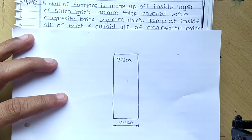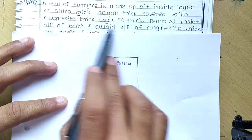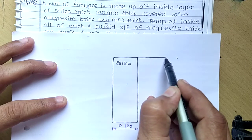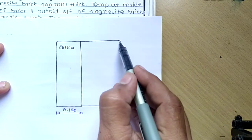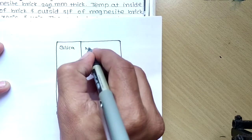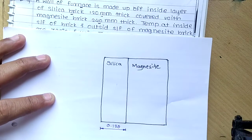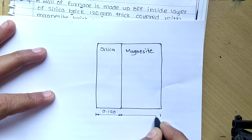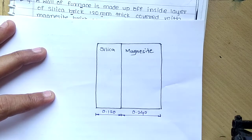After the silica, they have given a magnesite brick covered on the outside with a thickness of 240 mm. Let me draw the magnesite brick wall. So this is magnesite, and its thickness is 240 mm. Converting to meters, it becomes 0.240 meters.